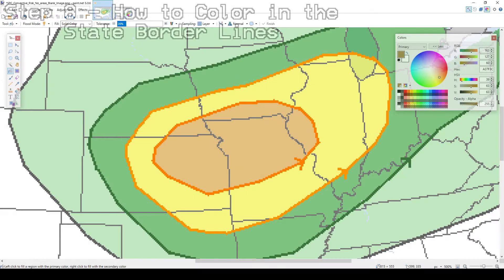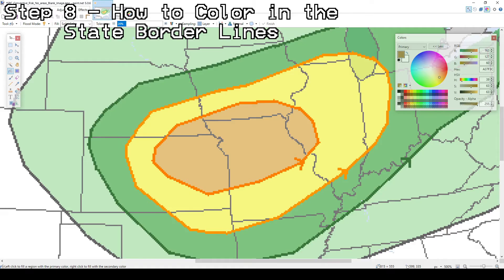Now for the final step of the coloring process, it is time for the state borderlines. It is recommended to use the paint bucket tool for this step. Head over to the website to find the hex codes for the state lines, then fill them in for the corresponding risks as shown.